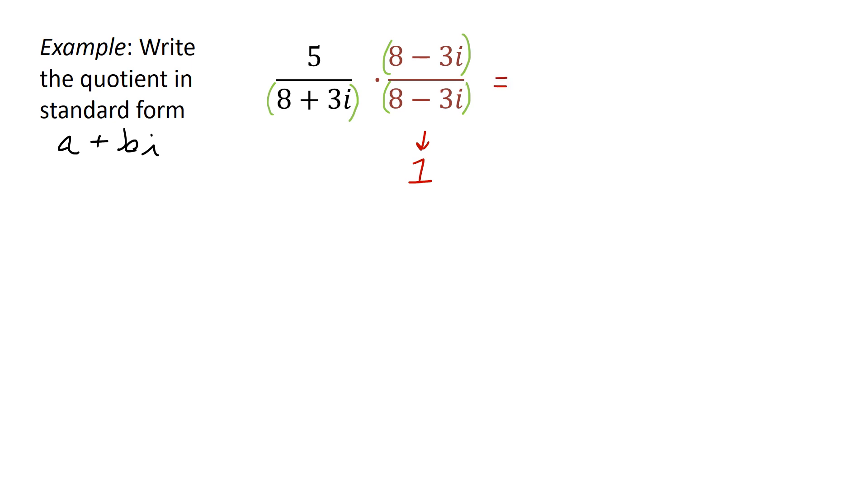We determined earlier that the denominator here is 73. And now for the numerator we just have to distribute. So 5 times 8 is 40 minus 15i. And last, because we're dividing by a monomial of 73, we could just write this as 40 divided by 73 minus 15 over 73i. And that's our final answer.